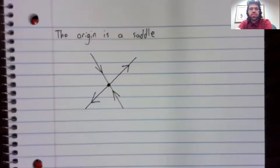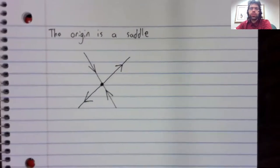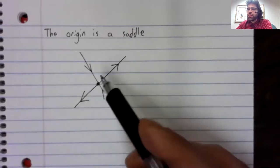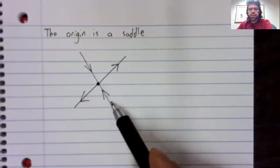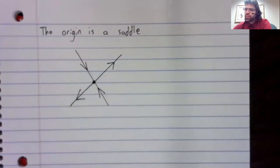One last example, and this is the example we're going to use in later videos. What if the origin is a saddle, a positive eigenvalue and a negative eigenvalue, each of which gives us an eigenvector. Well, this is an unstable fixed point.